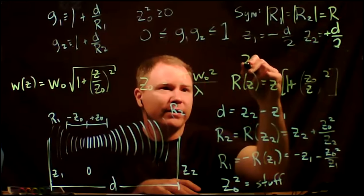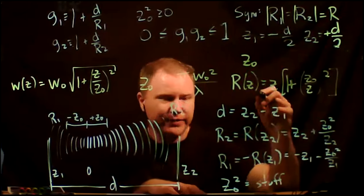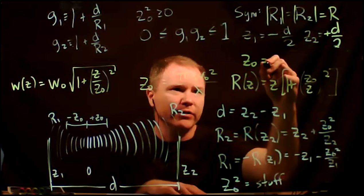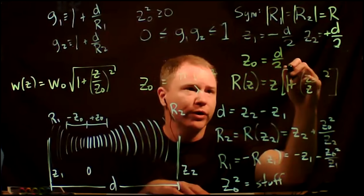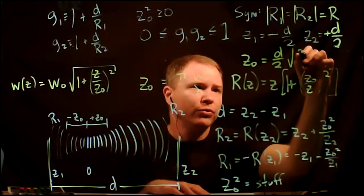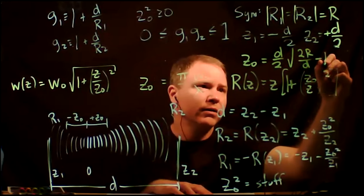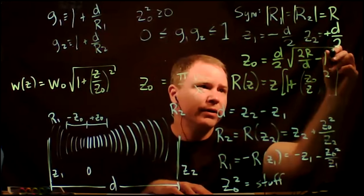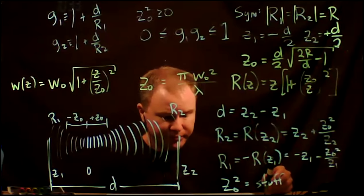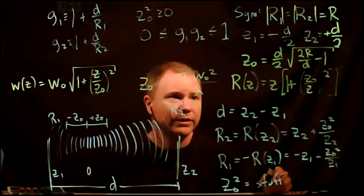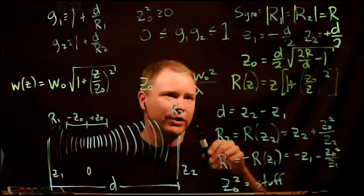For z_naught to be real in the symmetric case, the expression under the square root must be non-negative: 2R/d ≥ 1, or equivalently d ≤ 2R. So if you have mirrors of a particular radius of curvature, you must keep their separation less than twice that radius.